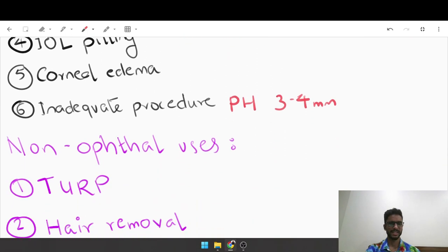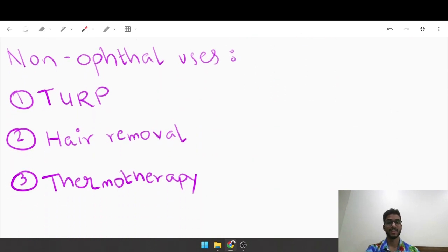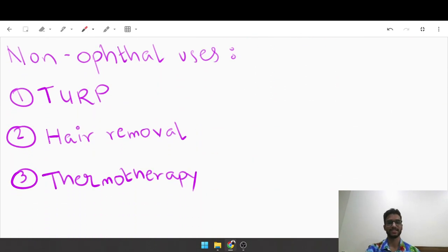Certain non-ophthalmological uses that could be asked, or might be interesting to know for ND-YAG: it is used in trans-urethral resection of prostate (TURP), it's used in laser hair removal, and used in thermotherapy which is used in certain types of skin cancers. That's about ND-YAG capsulotomy. Thank you so much.